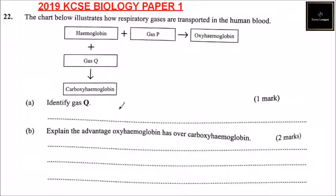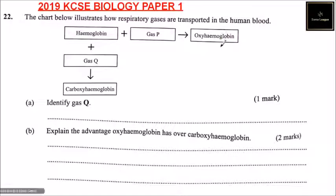Question number 22. The chart below illustrates how respiratory gases are transported in the human blood. We have the hemoglobin — you add gas P, you get oxyhemoglobin. Hemoglobin, you add gas Q, you get carboxyhemoglobin.